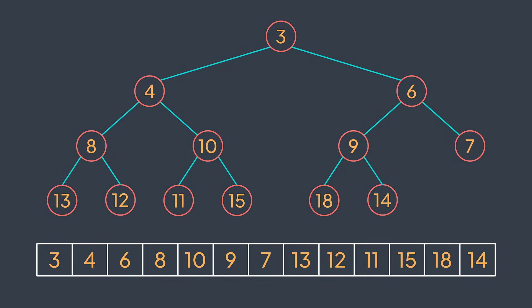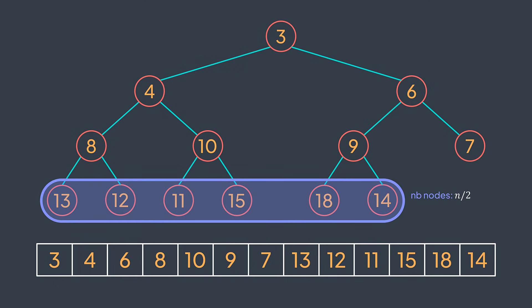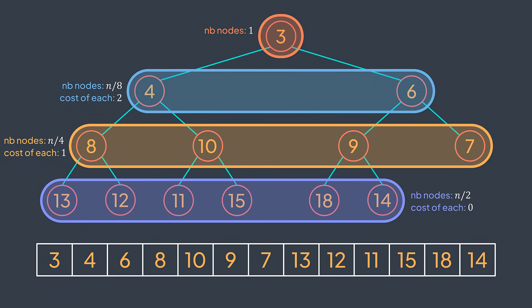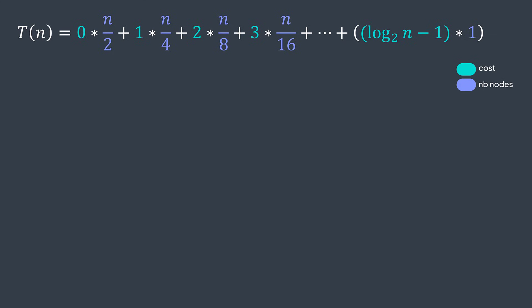What about the time complexity? When a tree is complete, the last level has at most around n/2 nodes where n is the total number of nodes. The level above has around n/4, then n/8, and so on until the first level which contains one node — the root. In sift down, the maximum number of iterations is the number of levels between the node and the last level. Nodes of the last level cost zero iterations, the level above costs at most one, then two, and so on until the root which may require log₂(n)−1 iterations. The total cost of heapify is the sum of each node multiplied by its cost: n/2 nodes at cost zero, n/4 nodes at cost one, n/8 nodes at cost two, and so on until one node at cost log₂(n)−1.